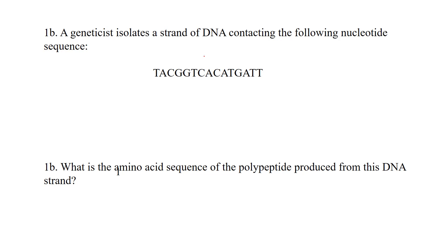It says a geneticist isolated a stranded DNA containing the following nucleotides. First of all, we know this is DNA because it has thymine in it. Sometimes they'll just give you a strand and you don't know what you have, so you look for those clues to determine what it is. Make sure they're not giving you messenger RNA — if they are, there's nothing to transcribe, just look it up in your messenger RNA codon library. In this case it is DNA, and you can recognize that by thymine being present in the sequence.